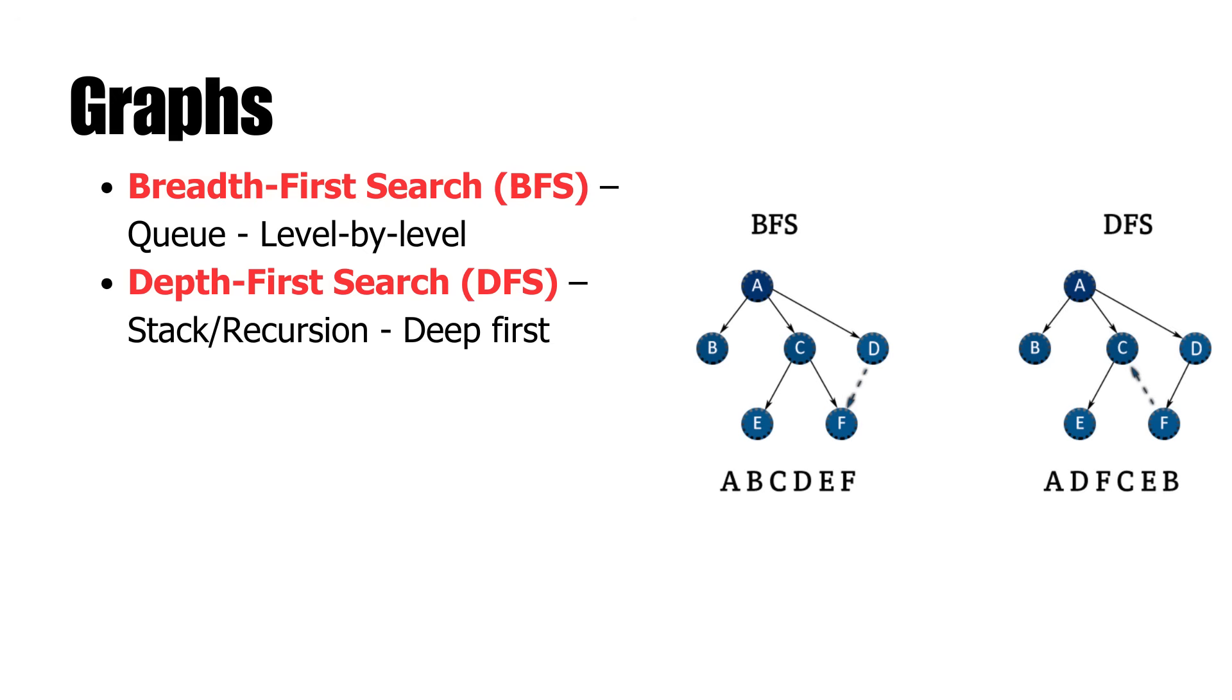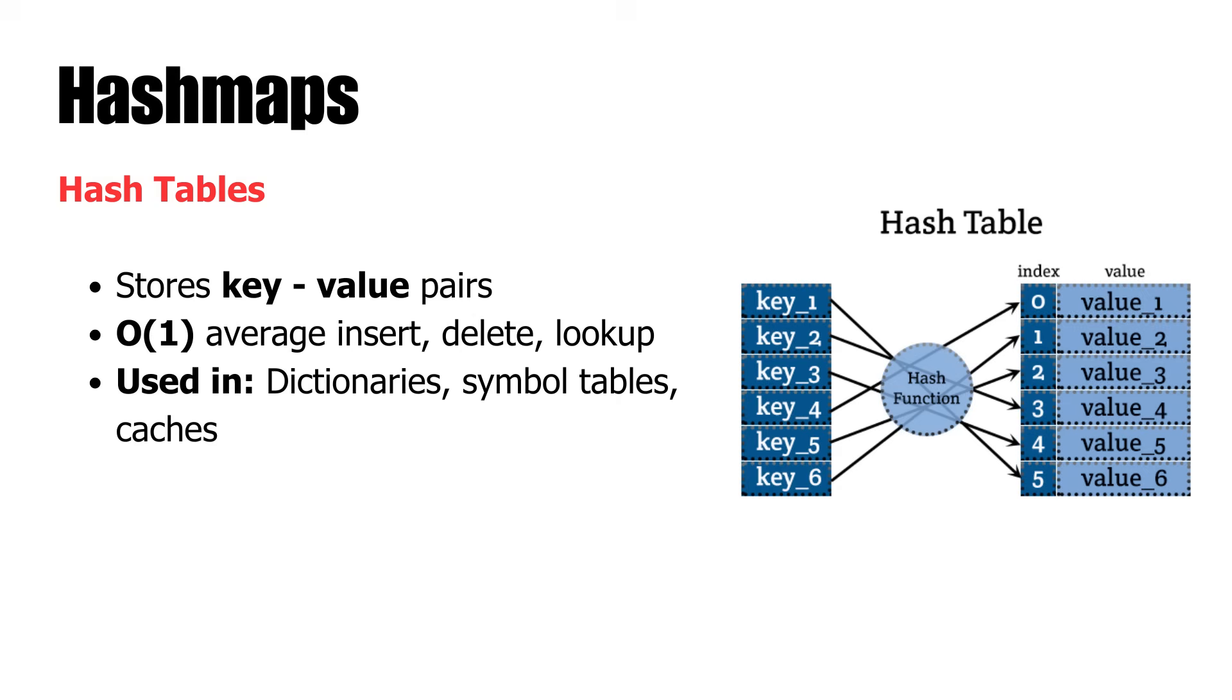The next topic we'll explore is hash maps or hash tables. A hash table or hash map is a robust data structure for holding key-value pairs. It supports average case constant time insertion, deletion, and lookups and is among the quickest tool in use today for such applications as building dictionaries, symbol tables, and caches.